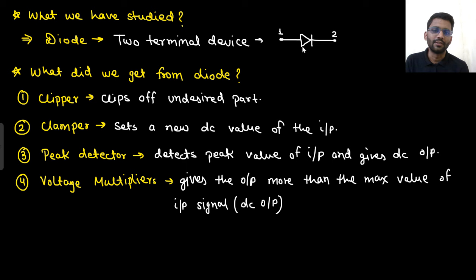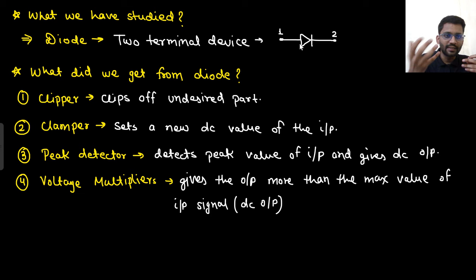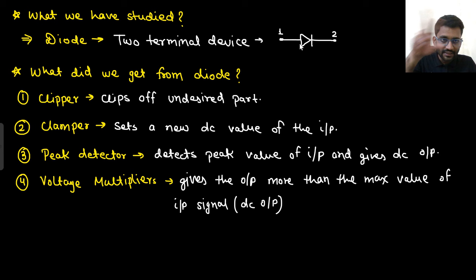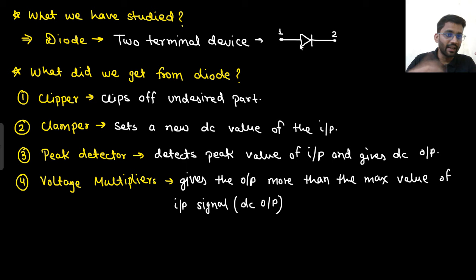In the two-terminal device we saw different applications. First we saw the clipper circuit, which clips the undesired part of the input signal. The clamper circuit sets a new DC level — it clamps up or clamps down the input signal. The peak detector detects the peak value, giving a DC output of +Vm or -Vm. In the voltage multiplier, the voltage gets amplified but the output is DC — you can get 2Vm, 3Vm, 4Vm, but the output is DC only.